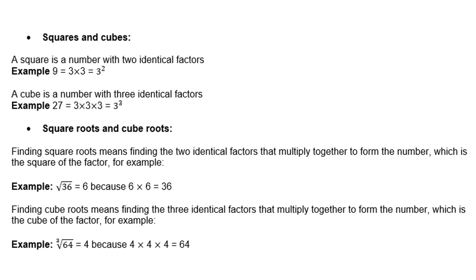Square root and cube root. Finding square roots means finding the two identical factors that multiply together to form the number, which is the square of the factor. For example, the square root of 36 is 6 because 6 times 6 is 36. Finding cube roots means finding the three identical factors that multiply together to form the number. For example, the cube root of 64 is 4 because 4 times 4 times 4 is 64.